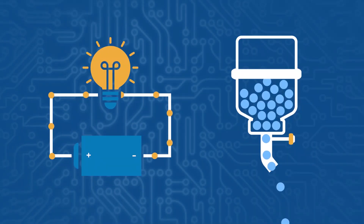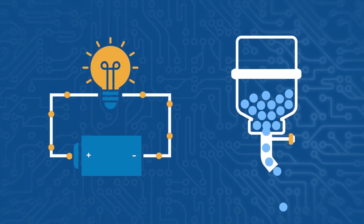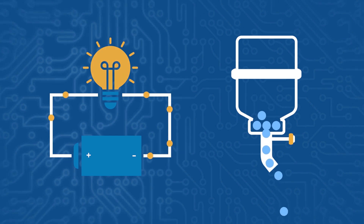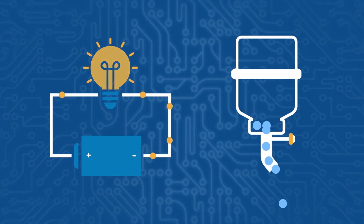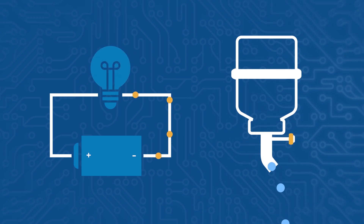As current moves through the circuit, we can use it to power lights, motors, processors, and other gadgets. As the current flows, it lowers the battery voltage. And just like the water flowing from the tank will slow to a trickle, the amount of electrical current flowing through the circuit is reduced as the battery voltage drops.